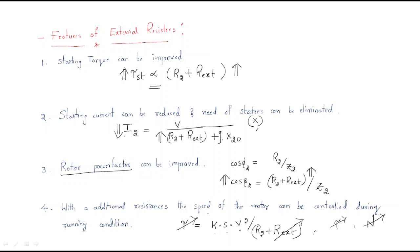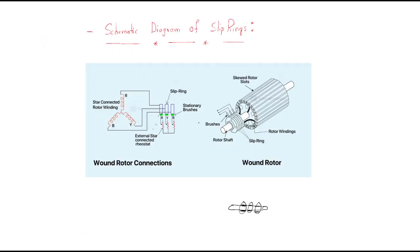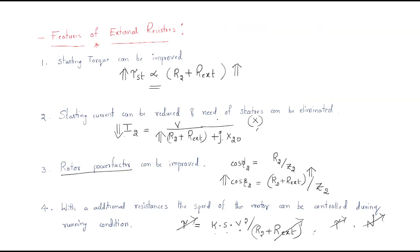By adding external resistance, the motor speed can be controlled during running conditions. These are the very important features of external resistance: it improves starting torque, reduces starting current eliminating the need for starters, improves rotor power factor, and allows speed control. Overall, the addition of external resistance improves the running performance of the motor. This concludes the session on schematic diagrams of slip rings and the features of external resistance.